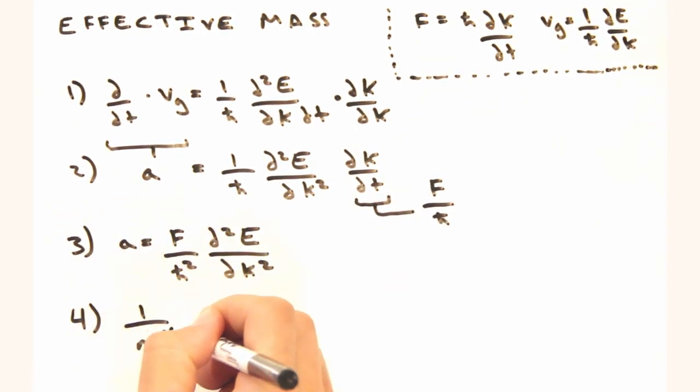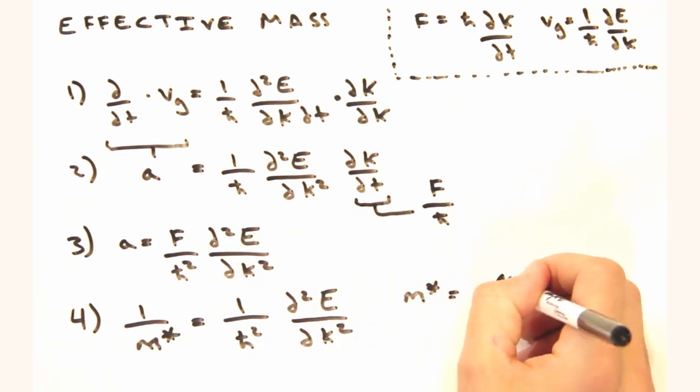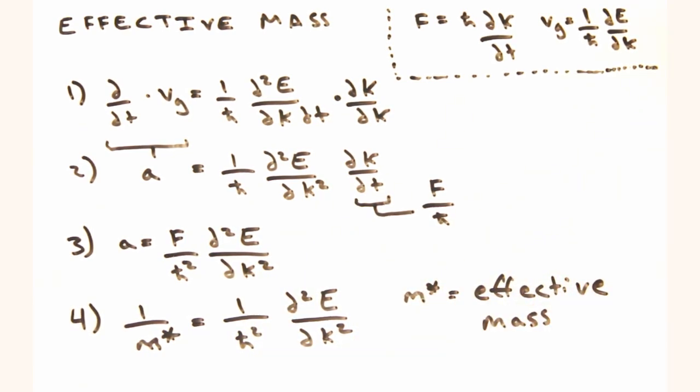Seems funny that we're writing 1 over m star, doesn't it? Yeah, it's just a convention. Since we've treated k as our independent variable, people typically like to see it on the bottom of the derivative. So nothing special, just a little easier on the eyes.